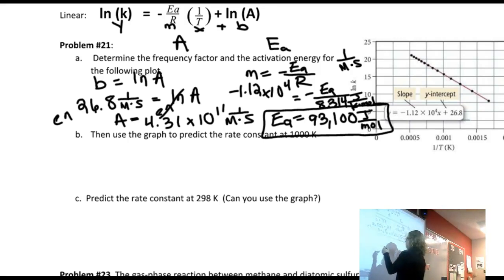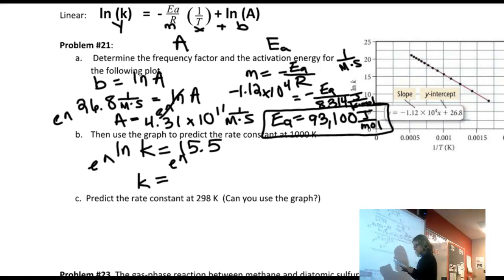In this case, I can use the fact that the natural log of K is equal to 15.5. And then I just solve for K. e to the, and the rate constant this time would be 5,390,000, one over molarity times seconds.